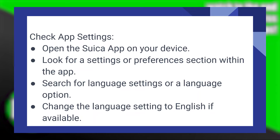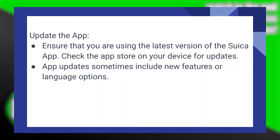Open the Suica app on your device. Then look for a Settings or Preferences section within the app. Search for Language Settings or a Language option, and change the Language setting to English if available. Then update the app and ensure that you are using the latest version of the Suica app.